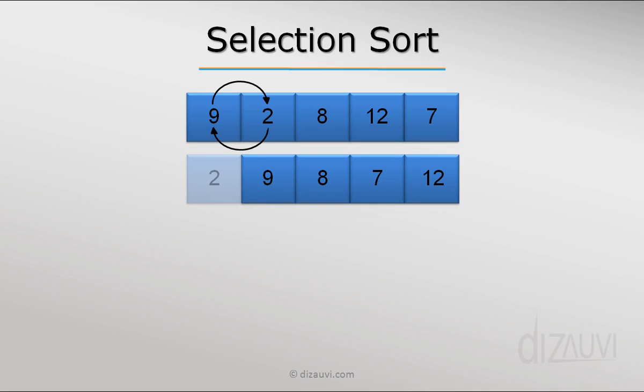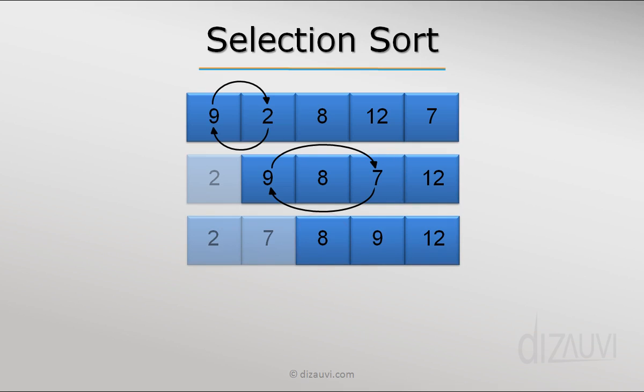Then from the remaining elements, that is starting from the second array element, we find the minimum and then exchange it with the second element of the array. So now the first two elements are sorted and we keep doing this until the whole array is sorted.